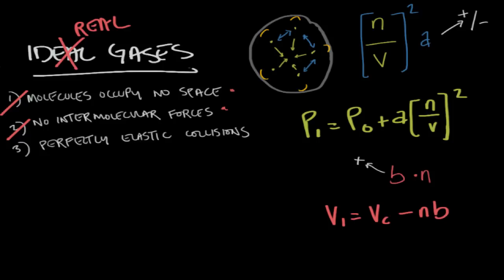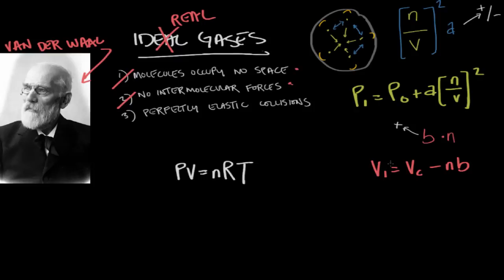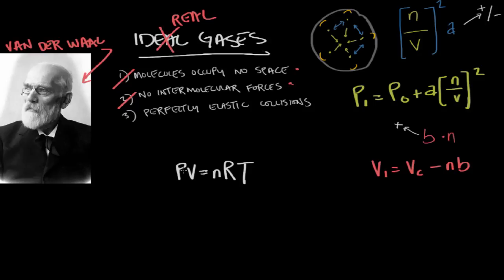So starting with the ideal gas law which is PV is equal to nRT, let's insert our corrected pressure for a real gas and our corrected volume for a real gas into the equation. So starting with our corrected pressure we know that the ideal pressure is equal to the pressure observed plus our attraction coefficient times our concentration, our molar concentration squared. So P observed plus a times n over V squared. And then we can insert our volume. So the ideal volume is actually equal to the volume of the container minus the number of particles times the bigness coefficient or b. So Vc minus nb. And the corrected product of the real pressure and the real volume now is equal to nRT.